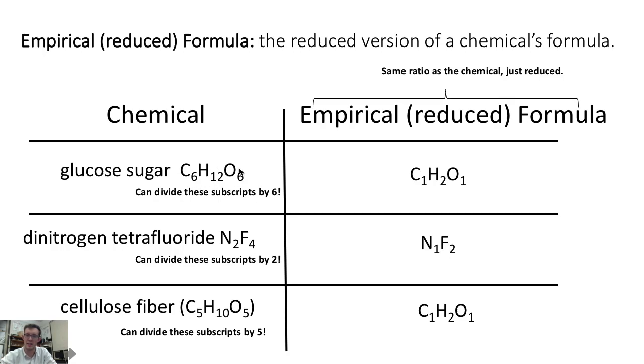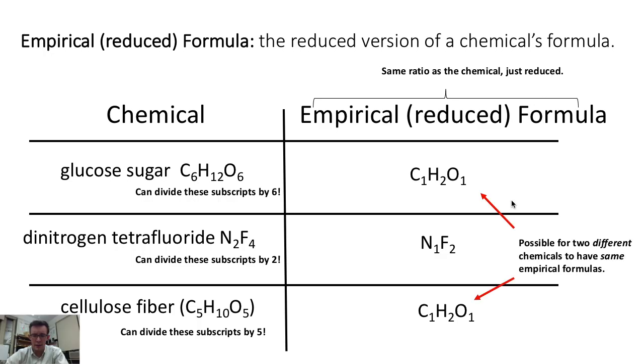So the empirical formula has the same ratios as the chemical, it's just reduced. And the other thing to point out is that it's possible for two different chemicals to have the same empirical formula. For instance, glucose and cellulose are different chemicals, but their ratio of elements is the same.